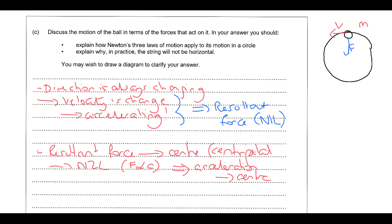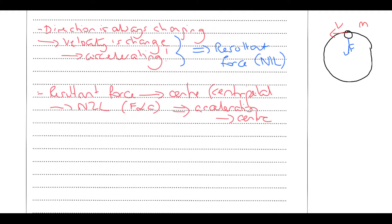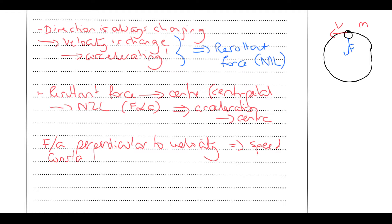Why is speed always constant as the object goes round the circle? It's because the force — and therefore acceleration — is always perpendicular to the velocity. This is one of the conditions for circular motion. Because the force is always perpendicular, the magnitude of speed stays the same, and no work is done to change kinetic energy. This is like satellites where gravitational force is always perpendicular to motion, or electrons orbiting atoms where the electric force is always perpendicular.